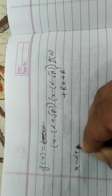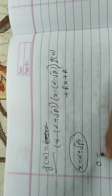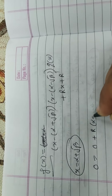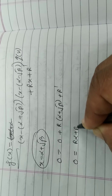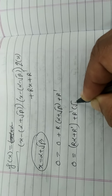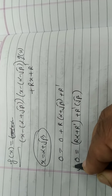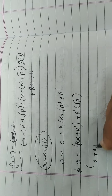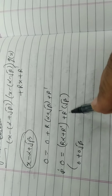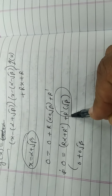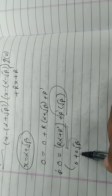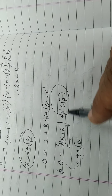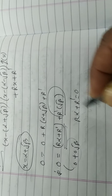अब यदि हम x = α + √β put करते हैं — क्योंकि यह f(x) का root है — तो f(x) = 0 आएगा, और quadratic factor 0 हो जाएगा। बचेगा r(α + √β) + r' = 0, जिसे हम लिख सकते हैं: (rα + r') + r√β = 0. इसे 0 + 0·√β के रूप में compare करें।